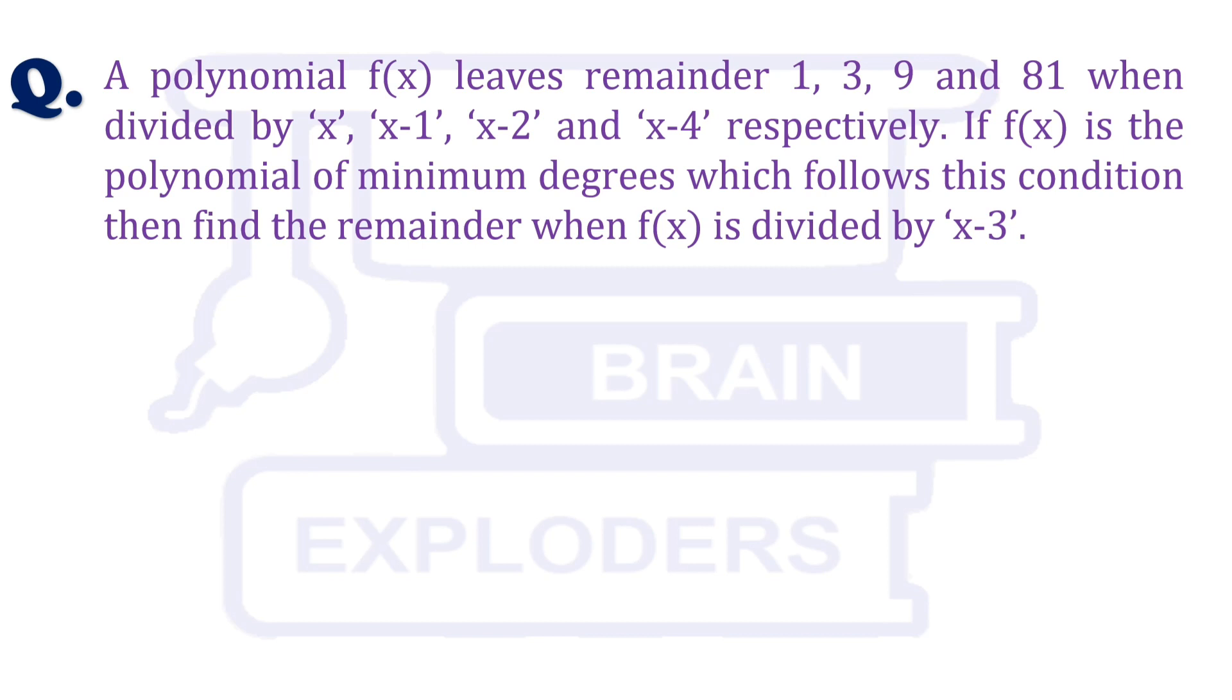If f(x) is the polynomial of minimum degree which follows this condition, then find the remainder when f(x) is divided by x minus 3.